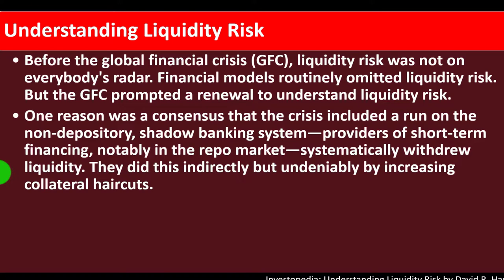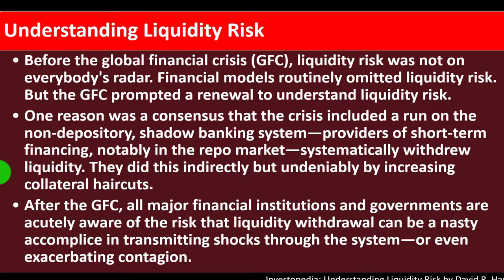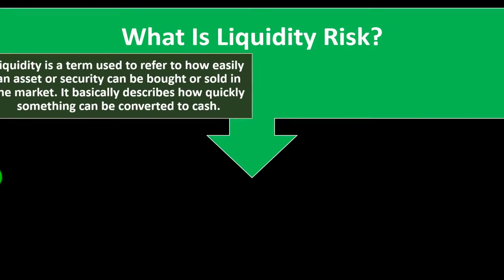One reason was a consensus that the crisis included a run on the non-depository shadow banking system. Providers of short-term financing, notably in the repo market, systematically withdrew liquidity — indirectly but undeniably by increasing collateral haircuts. After the GFC, all major financial institutions and governments are acutely aware of the risk that liquidity withdrawal can be a nasty accomplice to transmitting shocks through the system or even exacerbating contagion.